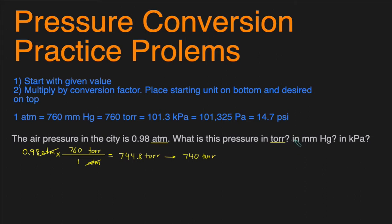The next part asks what the pressure of 0.98 ATM would be in mmHg. Here we're converting ATM to mmHg. If you look at the conversion factor, 1 ATM equals 760 mmHg — millimeters of mercury — which also equals 760 Torr. So since 1 ATM equals 760 of both millimeters of mercury and Torr, those two units are interchangeable. If I have 740 Torr, it means I also have 740 millimeters of mercury — you can keep the same number and just change the units.